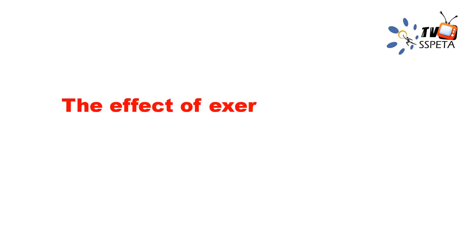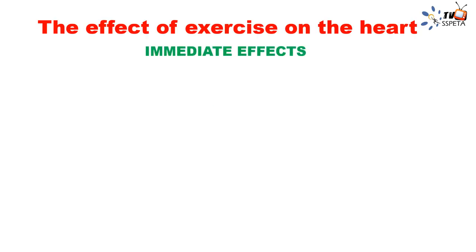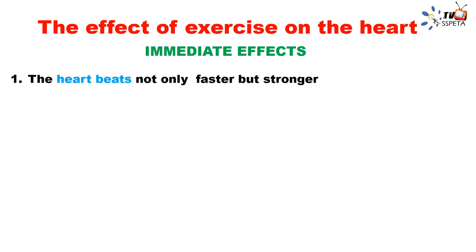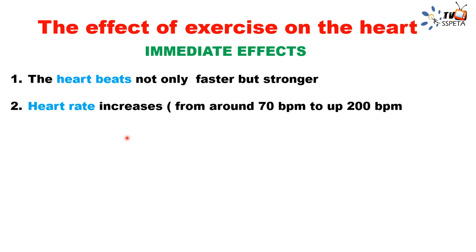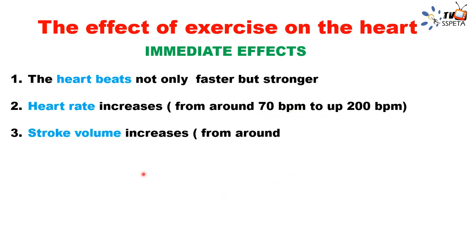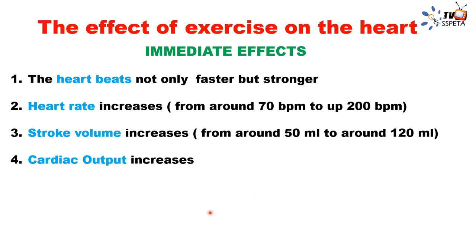Now the effect of exercise on heart rate. The immediate effects: the heart beats faster and stronger. Heart rate increases from 70 beats per minute to around 200 beats per minute. Stroke volume also increases from around 50 milliliters to around 120 milliliters. Cardiac output also increases due to the increase in both stroke volume and heart rate. Blood pressure will also increase. These are the immediate effects of exercise on the heart.